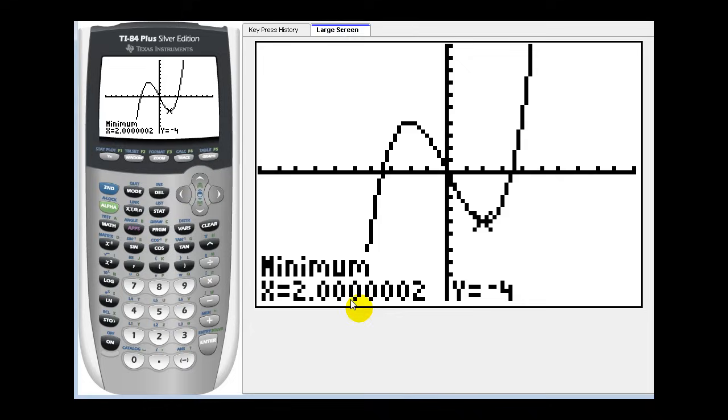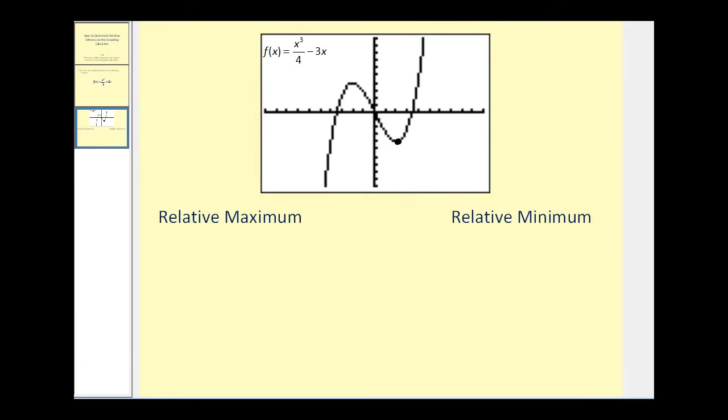Notice it's not perfect, but we have to recognize this point as two, negative four. Let's go ahead and record this. So this was the point, two, negative four.